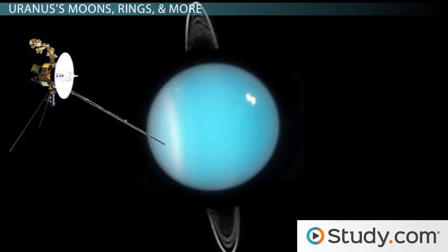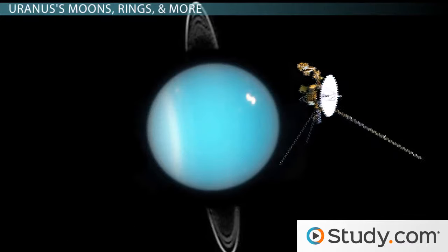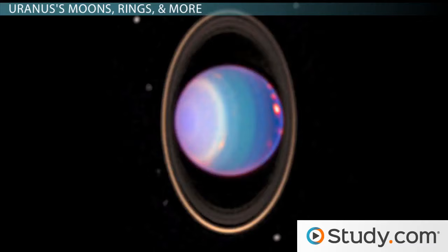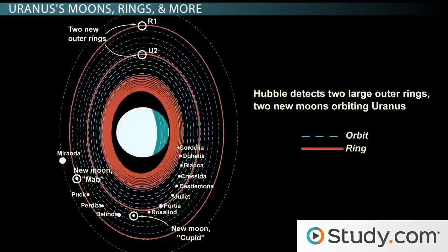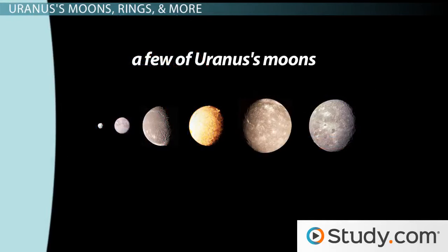However, the majority of our knowledge about the rings came from, once again, Voyager 2's flight past the planet. We know that the dark rings are made of water ice mixed with methane. As with Jupiter and Saturn, the rings formed from, and are periodically resupplied by, material that is ejected from impacts on the planet's moons by other celestial objects like comets.